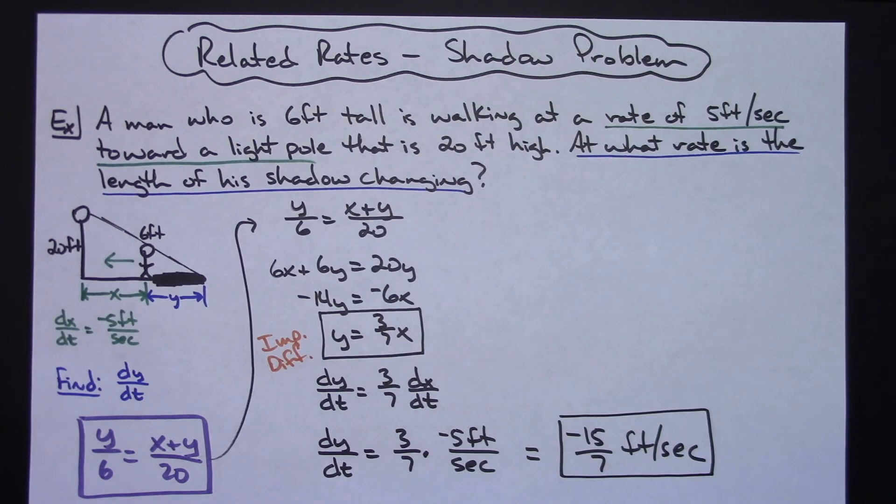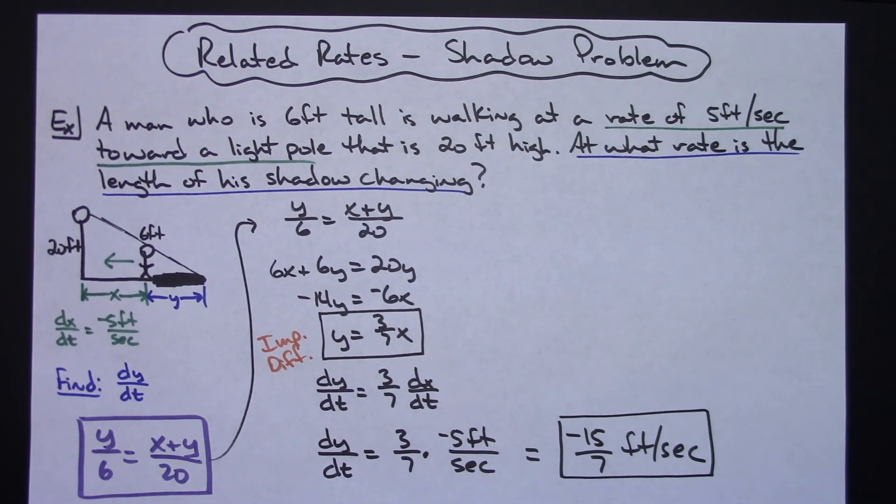So there's just one straightforward related rates problem dealing with a light pole and a shadow problem. Definitely thanks for watching. If the videos are helping you, don't forget to share with your friends and subscribe to the channel. Thanks.